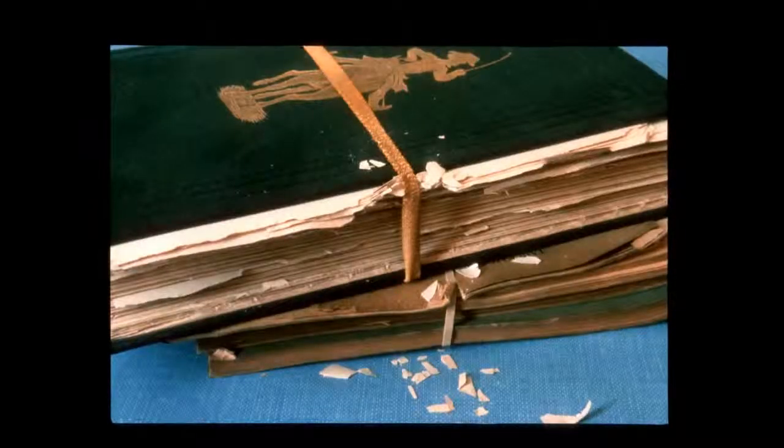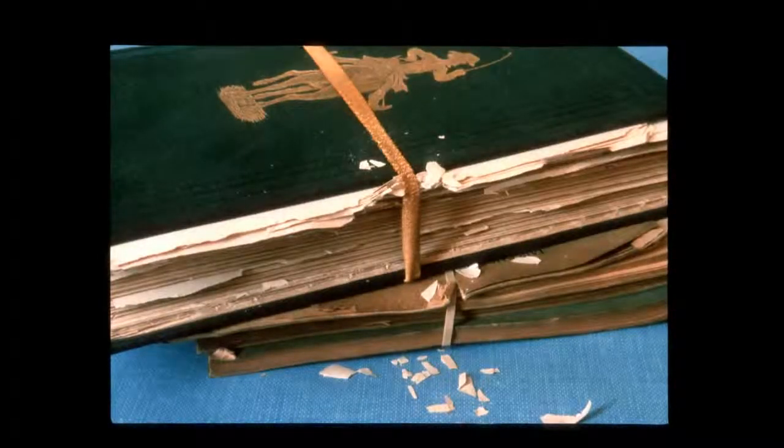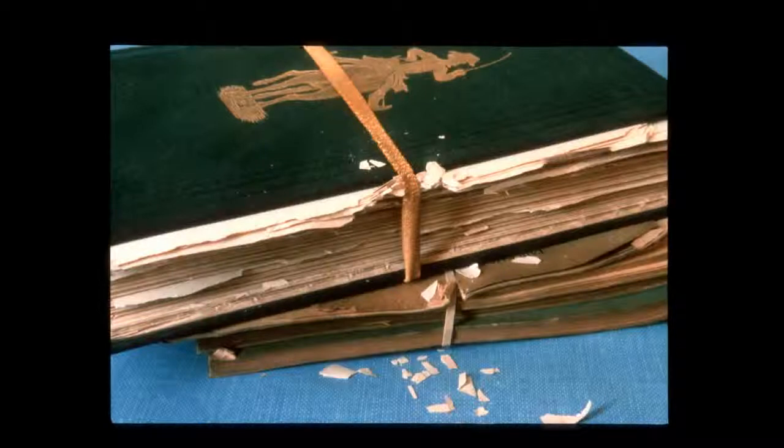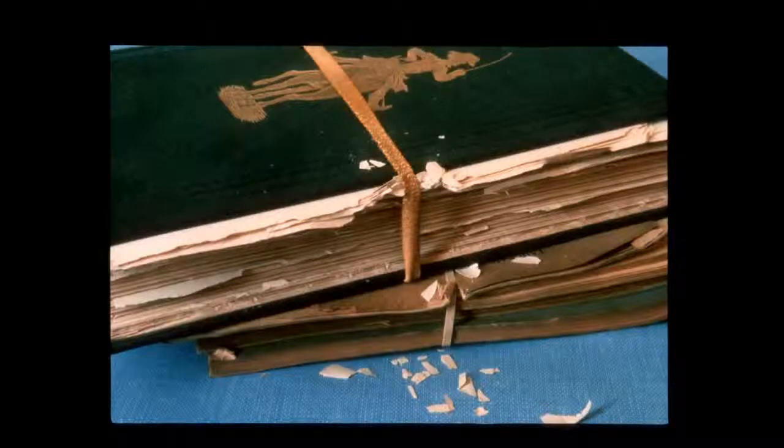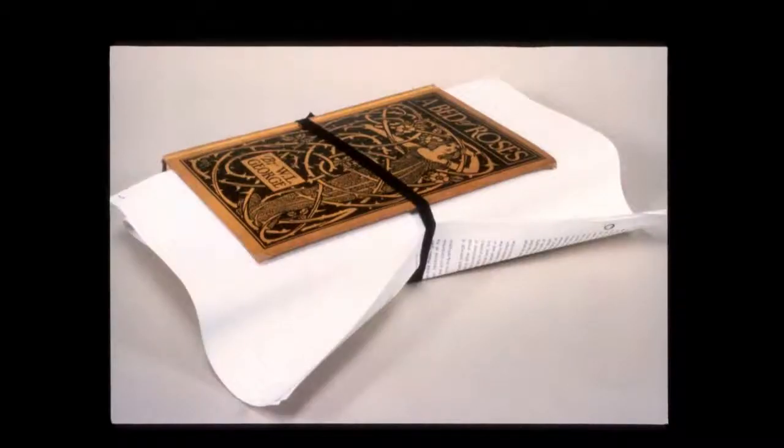Rubber bands are another common enemy of books. Only part of the damage being done here is visible. As rubber rots, it becomes sticky and emits damaging sulfur compounds. Cotton tape is a good alternative - it is soft, stable, and useful for tying up books which need repair. Unfortunately, inappropriate use of any product can be damaging.